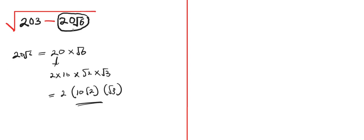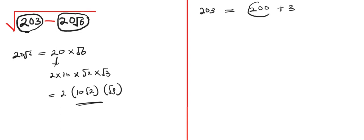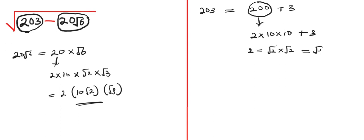Now that we are done with this particular part, let's concentrate on this part. So we are going to use this part of the board. We have 203 is equivalent to 200 plus 3. 200 plus 3 will give you 203. So we can play around with this 200. So 200 is equal to 2 times 10 times 10. 10 times 10 is 100 and 100 times 2 is 200. So we have plus 3.